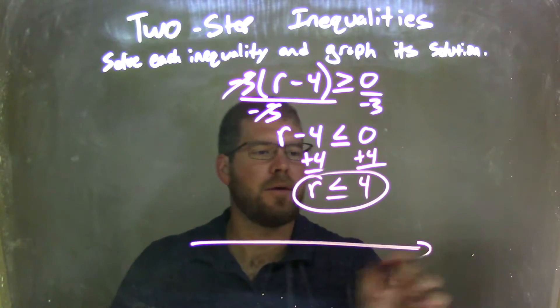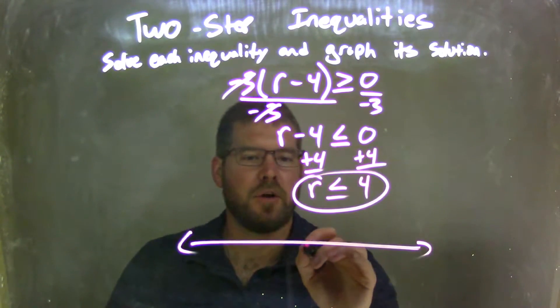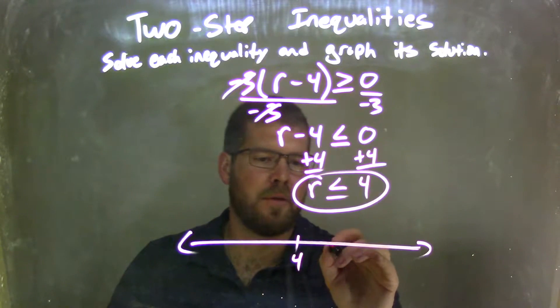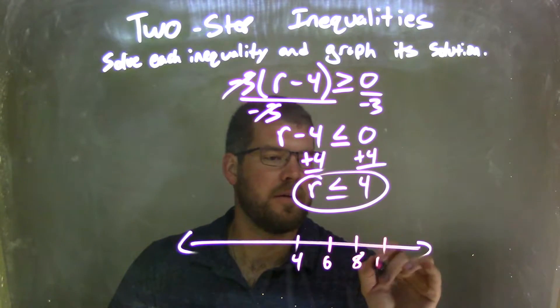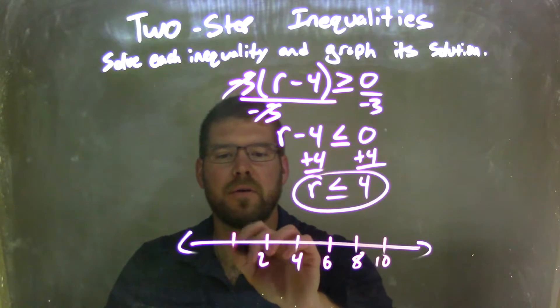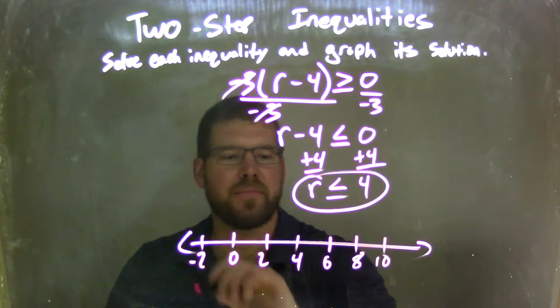So now I need to graph it. Let's put 4 right in the middle. Why not? Let's go in 2s: 6, 8, 10, 2, 0, negative 2.